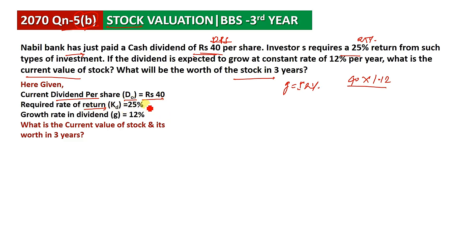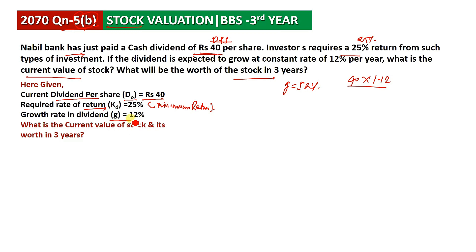If you have a minimum return on investment, that is the minimum required return rate. You can see 25% is the required rate of return and there is also the growth rate. The dividend grows at the growth rate.